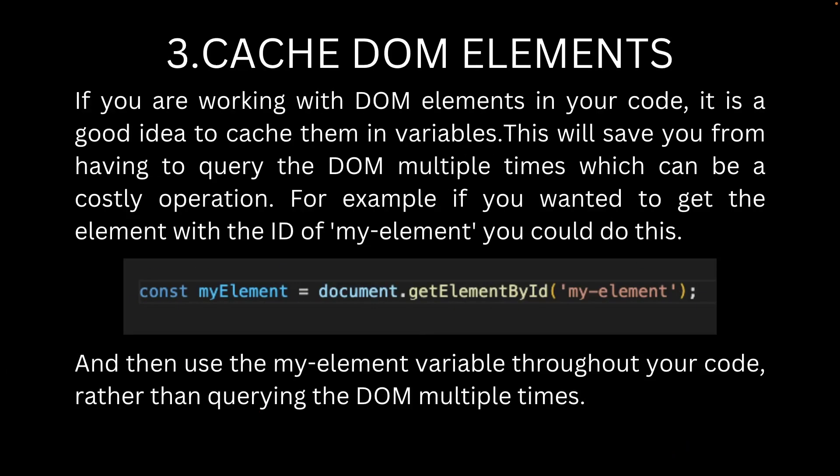Number 3: Cache DOM elements. If you are working with DOM elements in your code, it is a good idea to cache them in variables. This will save you from having to query the DOM multiple times, which can be a costly operation. For example, if you wanted to get the element with the ID of myElement, you could do as shown in the example below, and then use the myElement variable throughout your code rather than querying the DOM multiple times.